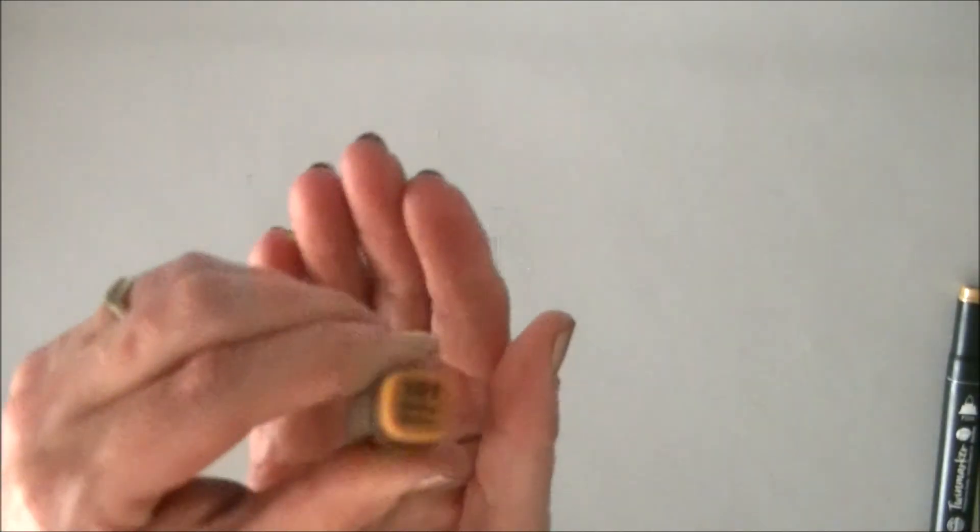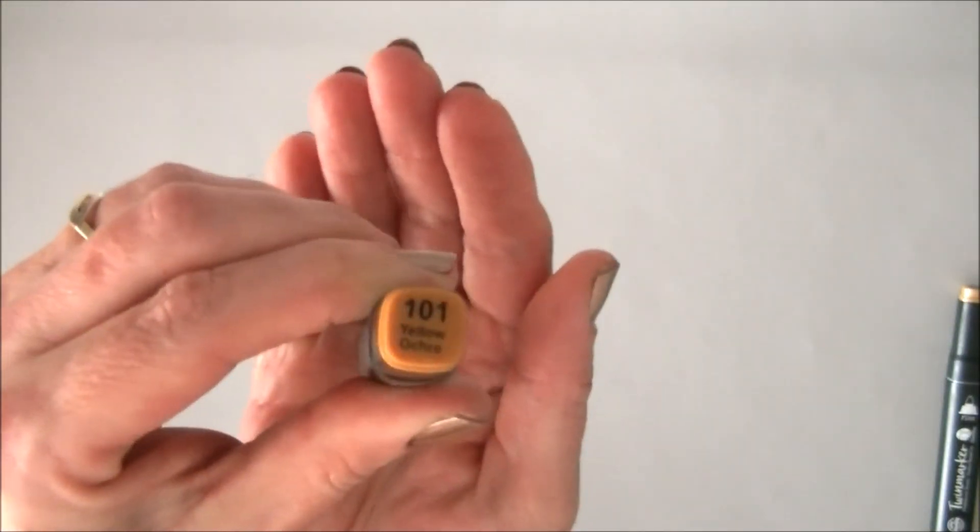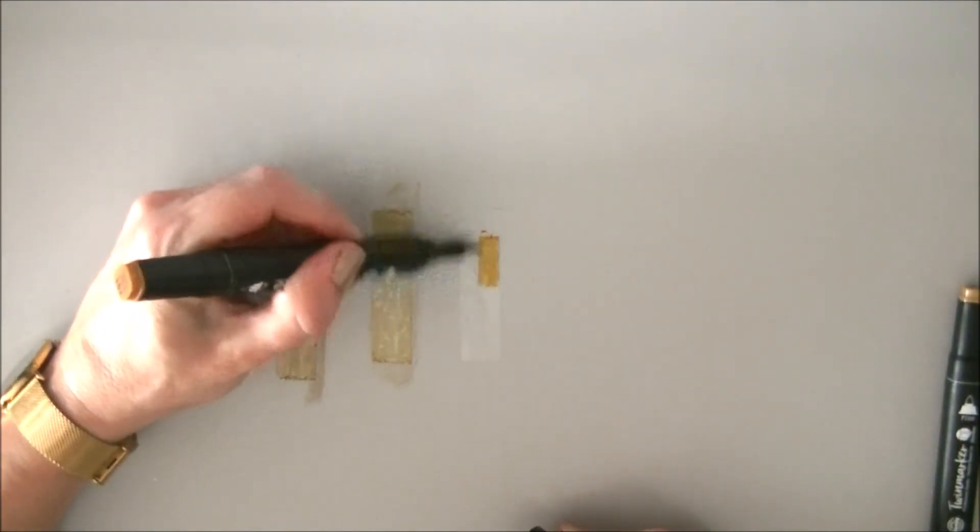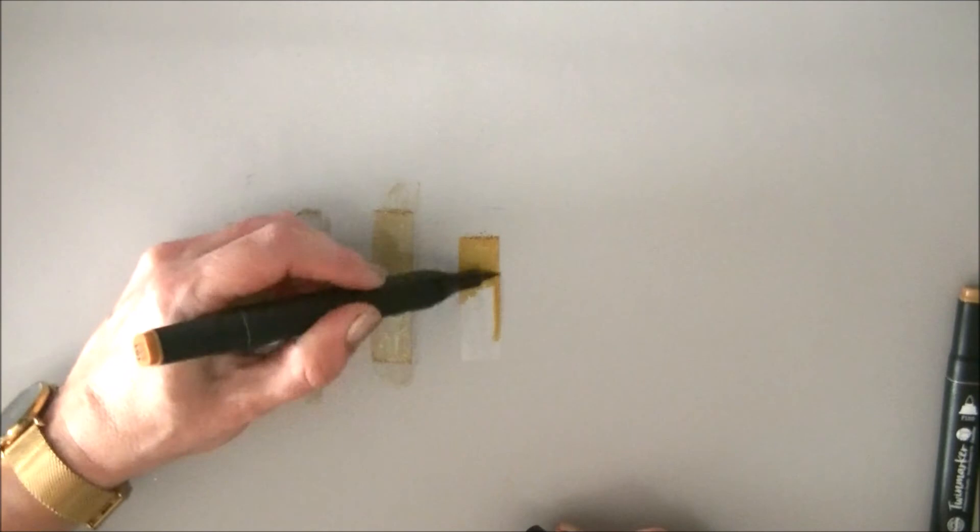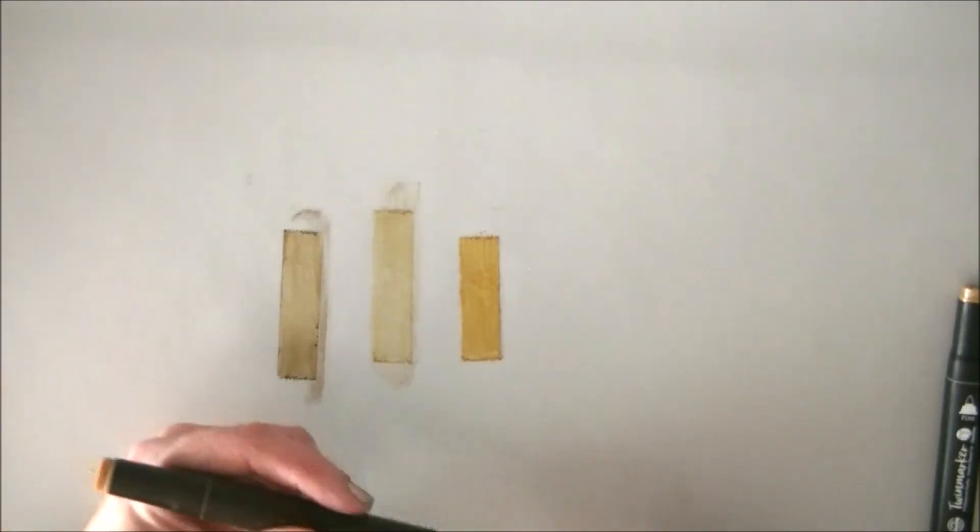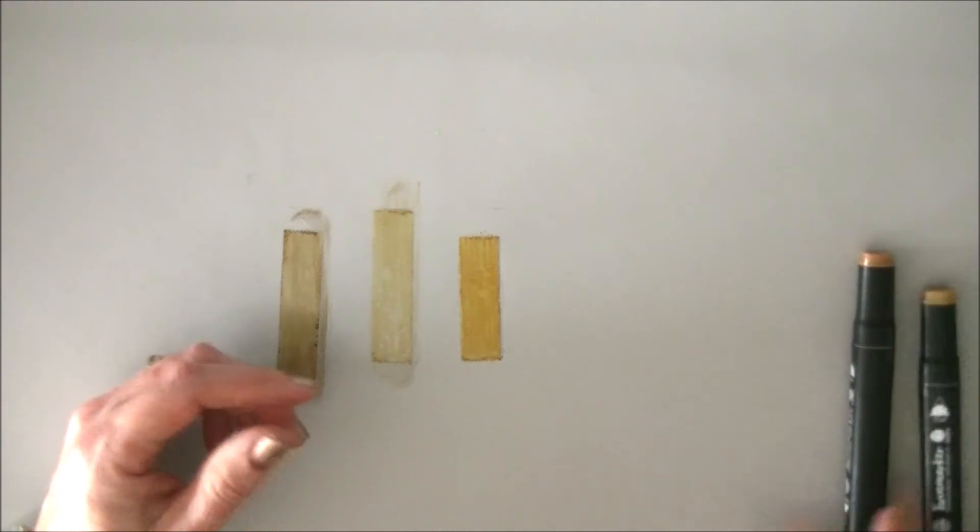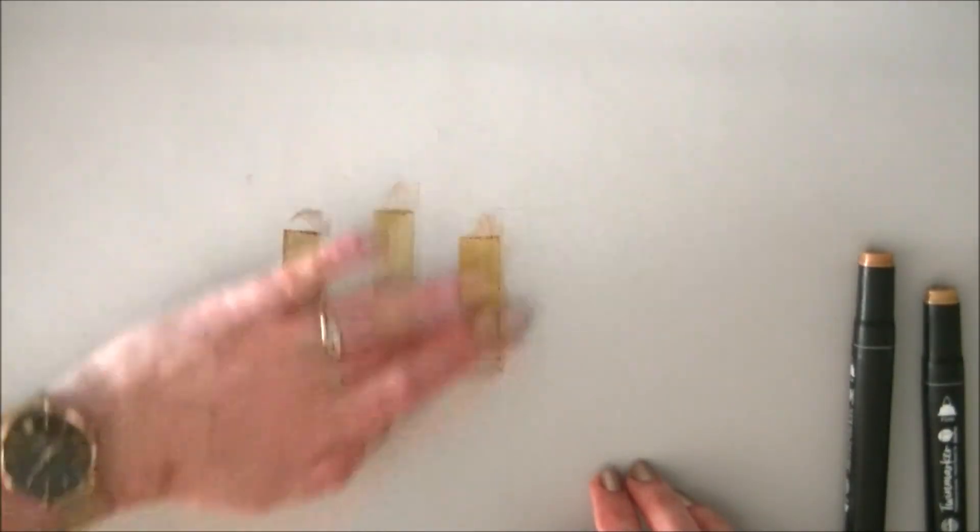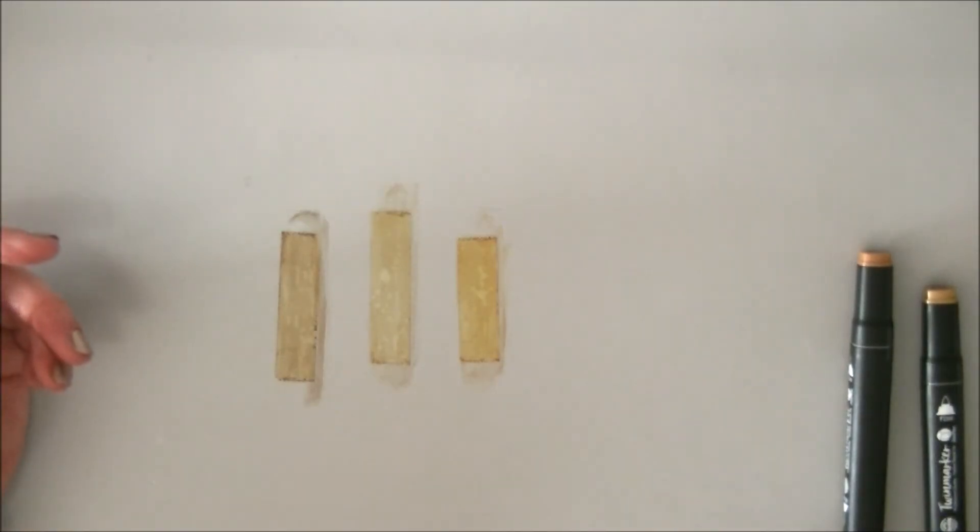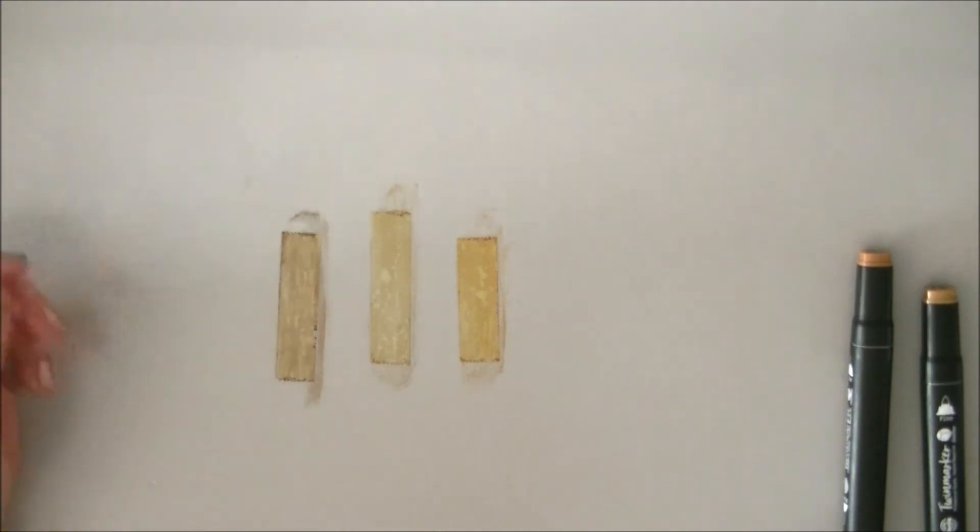And for the last color I'm using this yellow ochre. And you can use any kind of colors. I like to use the brown or yellowy tones. But you can make this tape in any color you'd like. And sometimes I do use my heat tool to dry it a little bit more. But it's really fast.